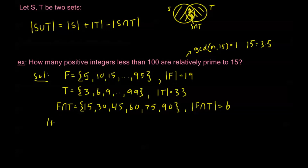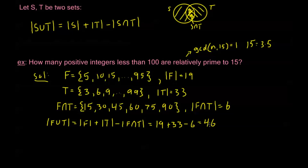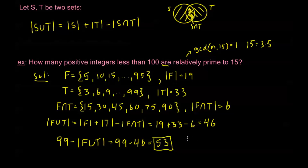By the formula, the order of F union T equals the order of F plus the order of T minus the intersection, which is 19 + 33 − 6 = 46. But 46 is not the final answer — it tells us there are 46 numbers that are NOT relatively prime to 15, whose GCD with 15 is 3, 5, or 15. So the answer is 99 − 46 = 53. There are 53 natural numbers less than 100 that are relatively prime to 15.